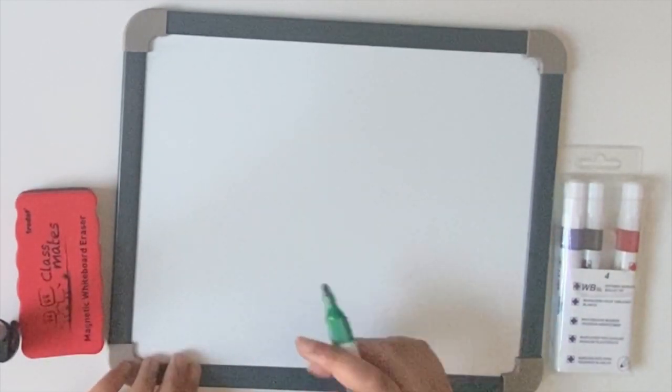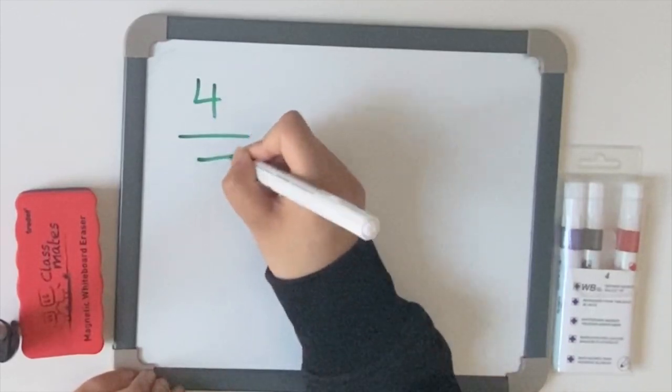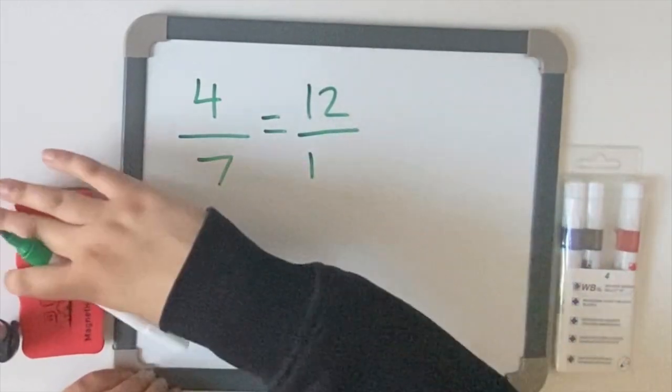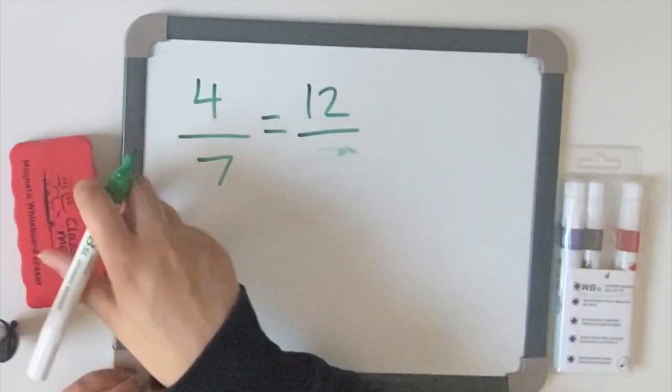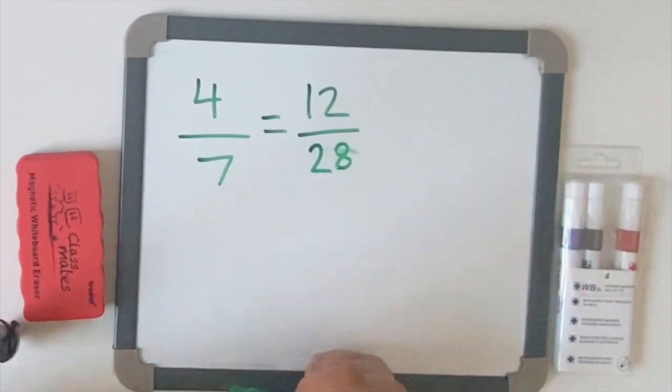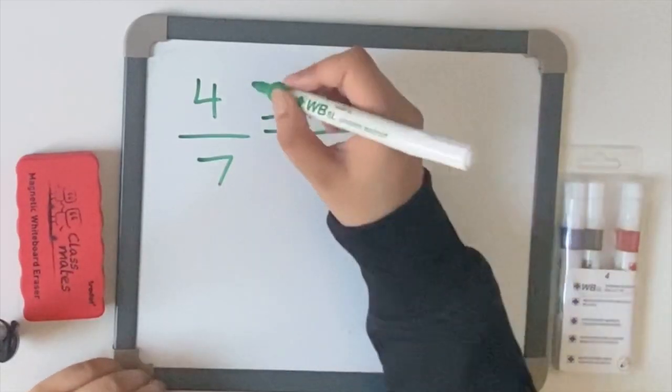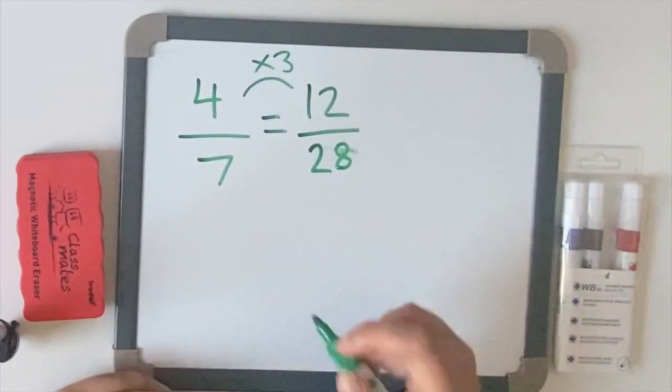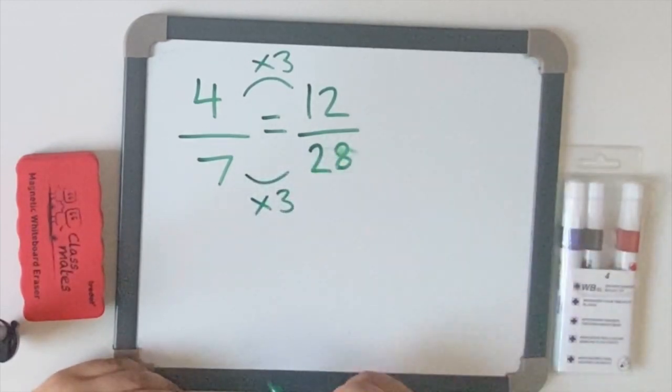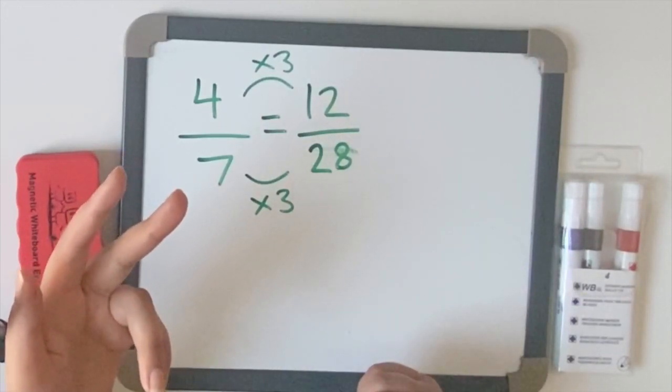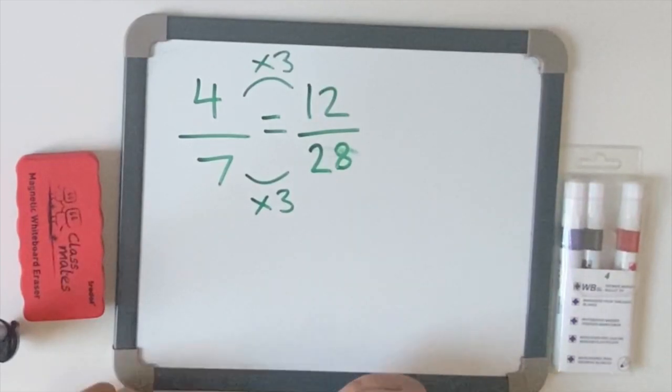But let's have a look at the first one. We have four sevenths and we have twelve twenty-eighths. So how many times does four go into twelve? Four, eight, twelve. You multiply it by three. What you must do to the top, you have to do to the bottom to make sure it keeps the same value. So seven times three. Well let's see. Is it twenty-eight? Seven, fourteen, twenty-one. No, it's not twenty-eighths, is it? The answer should have been twelve twenty-oneths. But over here it says twenty-eighths. So that is not an equivalent fraction.